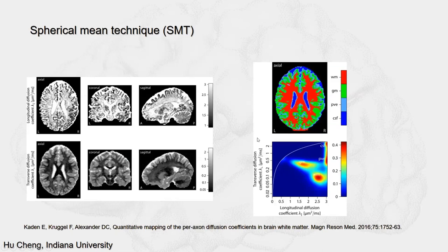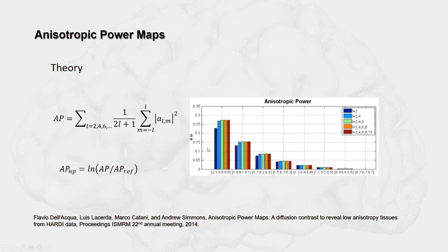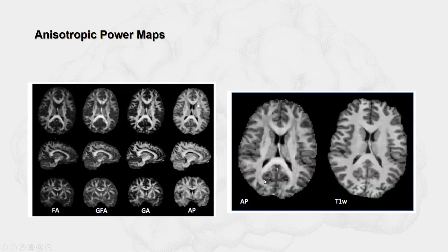Using the spherical mean technique, Caden et al. showed that the transverse and longitudinal diffusion coefficients together can very well separate brain tissue into gray matter, white matter, CSF, and partial volume effects. It is also worth mentioning that an isotropic power map derived from the spherical harmonic expansion of the DW signal resembles the T1-weighted image. You can compute an isotropic power map using this equation, and the resulting map looks very similar to the T1-weighted image.